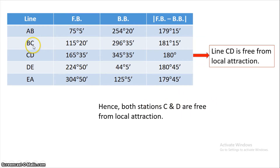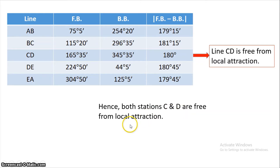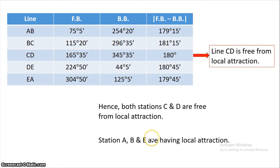This indicates that stations C and D are free from local attraction. There are 5 stations: A, B, C, D, and E. Stations C and D are free from local attraction, while the remaining stations A, B, and E are affected by local attraction. So the answer to the first question is that stations A, B, and E have local attraction.